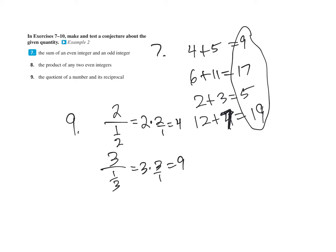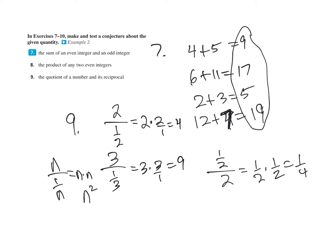What if the number was one-half? One-half's reciprocal is two. The top times the reciprocal of the bottom — that would be one-half squared. So it is the number squared. The conjecture: the quotient of a number and its reciprocal — n over (1/n) — equals n times the reciprocal of the bottom, or n squared.